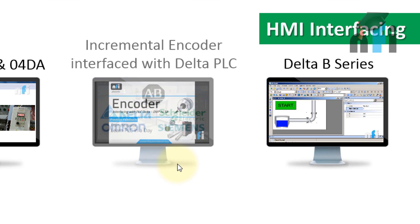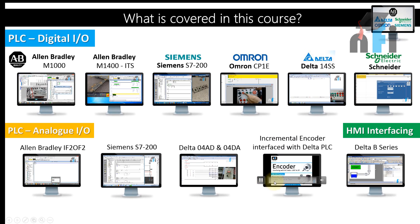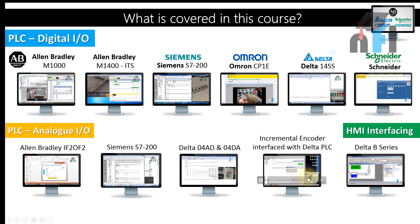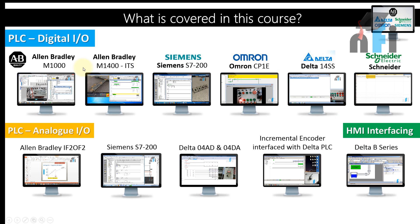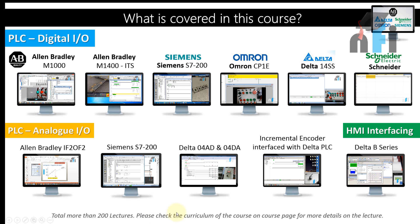Finally, we also have incremental encoder interface with Delta PLC — this covers how to interface your encoder and how to read the feedback coming in high-speed pulses from the encoder in the PLC. These are all the different tutorials we have in this course, and if we sum up everything, we have more than 200 lectures. You can see the details in the curriculum of this course.